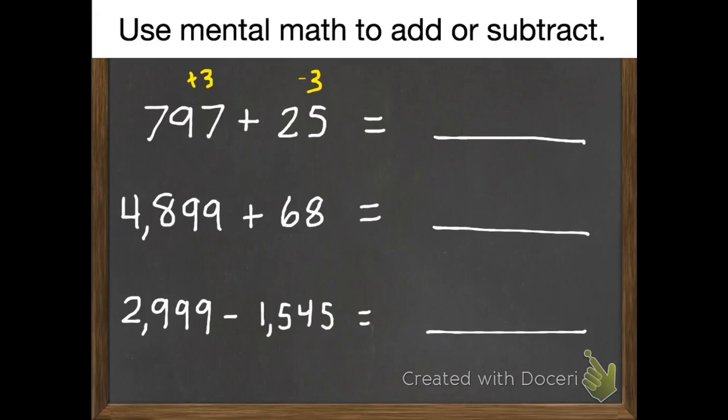Okay, for this one, the way I would do it is to add 3 and subtract 3 from the other, which changes these to 800 plus 22, which is 822.